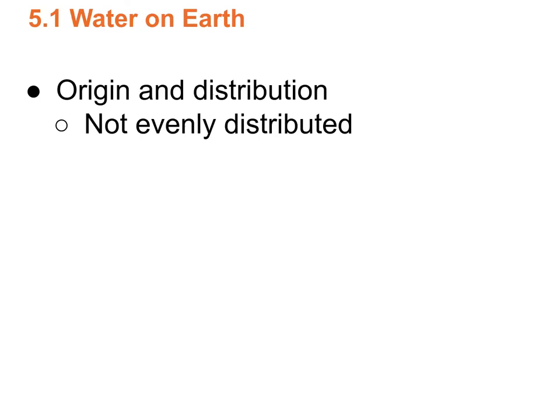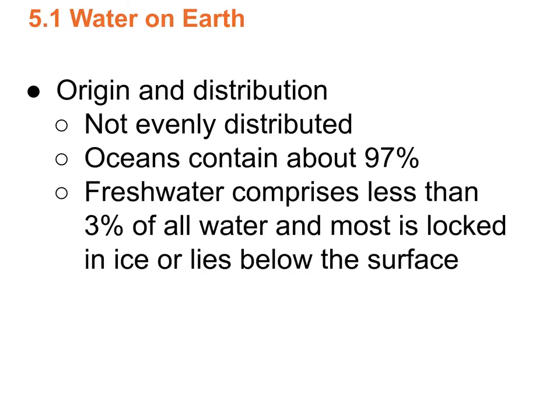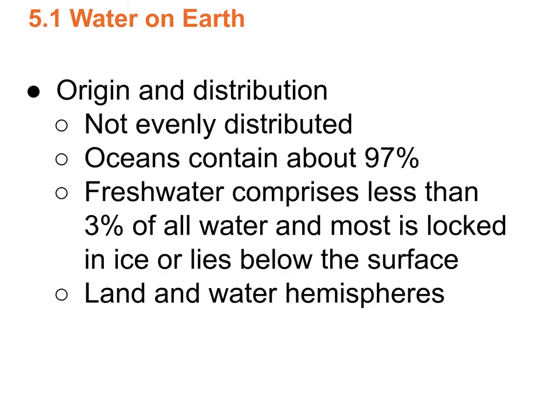Where do we get the water? Some of it has been present from the beginning, some we got from comets, but it's not evenly distributed. The oceans contain about 97%. Fresh water is less than 3% of all the water on Earth, and most of that is frozen. Most of the water that isn't frozen is below the surface as groundwater that you can only get at with a well.